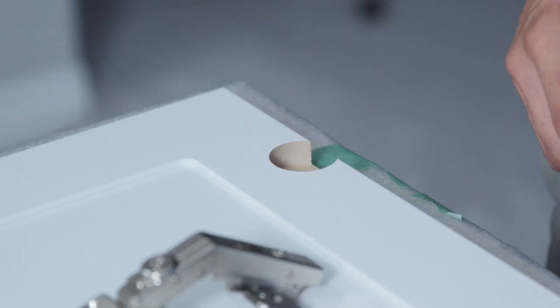The hinge holes that extend past the edge of the door are for the bifold hinges. These are the hinges that attach the two doors together.